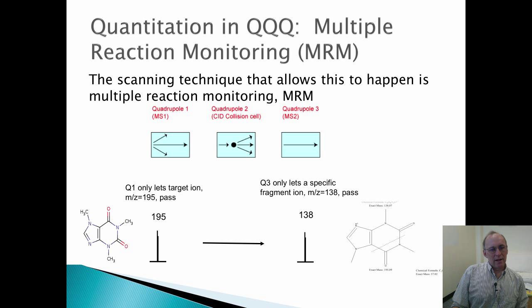This is sent through to the collision cell, where it is collided with inert gas, which is typically argon or hydrogen, producing fragment ions. The third quadrupole will then isolate on a particular fragment ion, in this case M over Z of 138, so only a compound that has an apparent M over Z value of 195 and a product M over Z value of 138 will make its way all the way from the source to the detector.